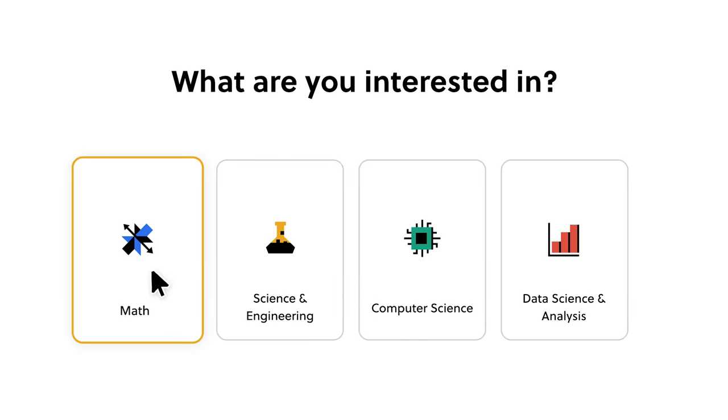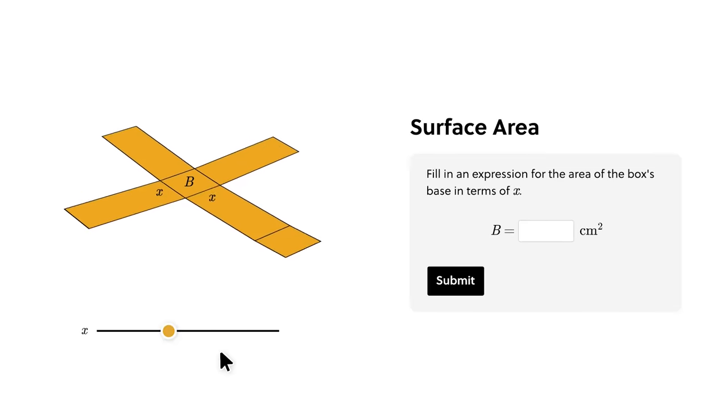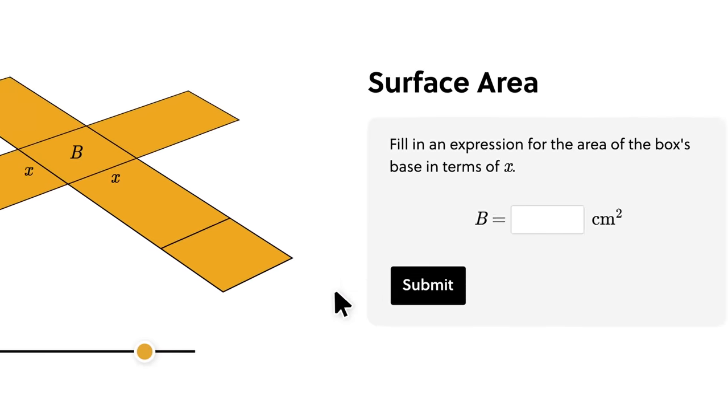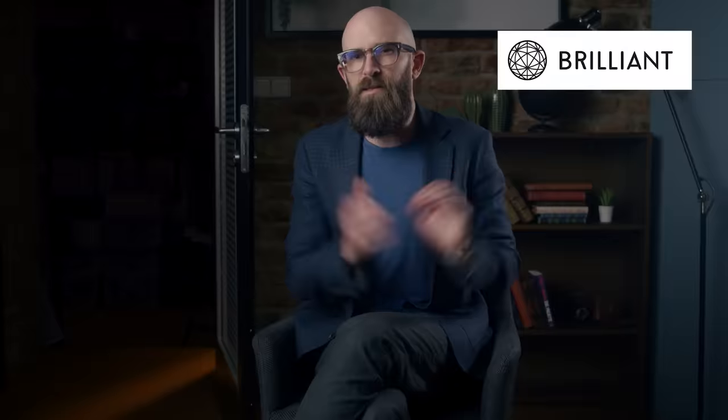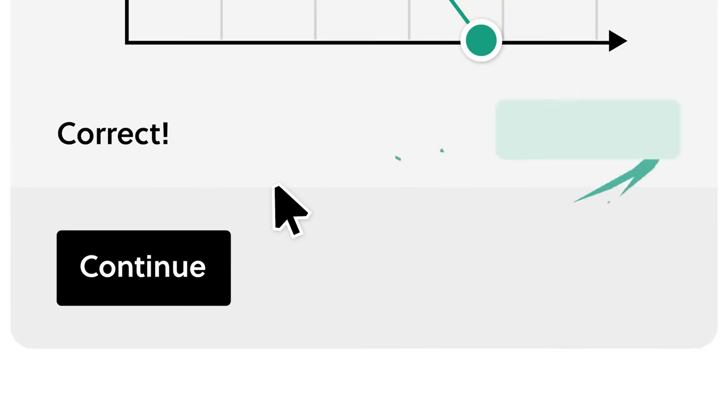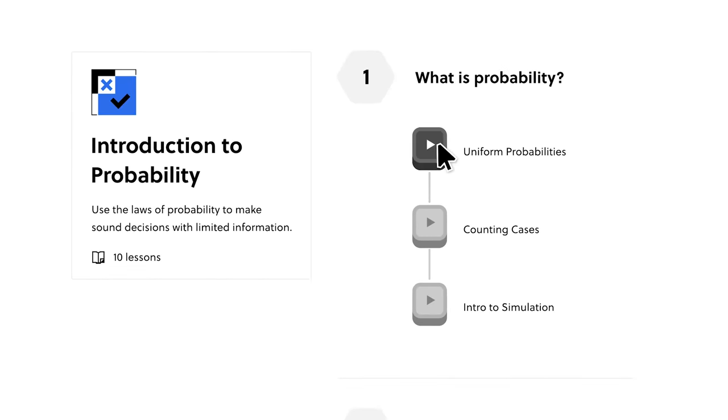You know how important it is to stay ahead in this fast-paced tech world. Well, brilliant.org is there to help you do just that. They've got thousands of interactive lessons covering everything from foundational maths to advanced topics like artificial intelligence and neural networks. Brilliant's courses are designed to be hands-on and visual, making learning super engaging and effective. It's not just about memorizing equations, it's about building your intuition and analytical skills.